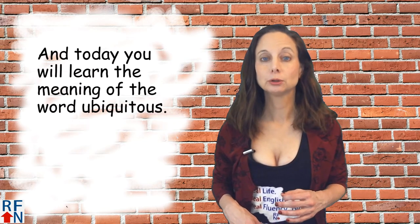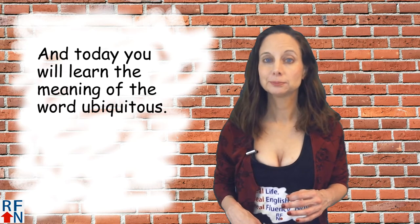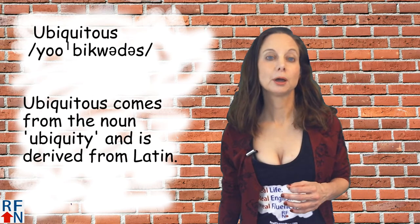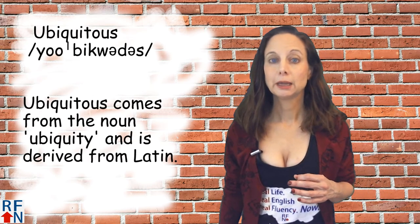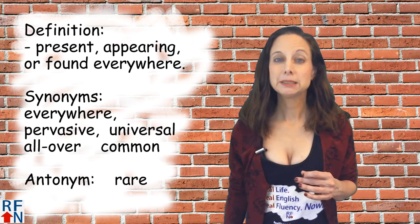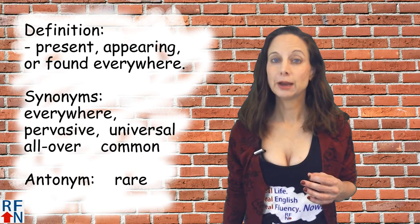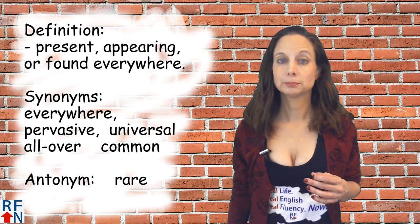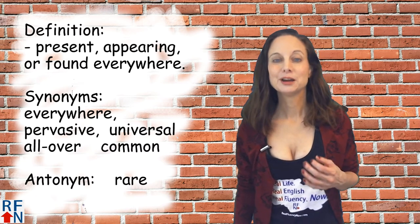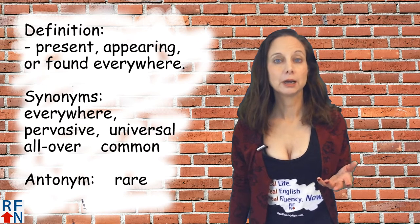Today you will learn the meaning of the word ubiquitous. Ubiquitous comes from the noun ubiquity and is derived from Latin, and it means present, appearing, or found everywhere. Synonyms are everywhere, pervasive, universal, all over, and common.